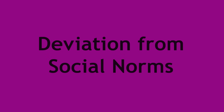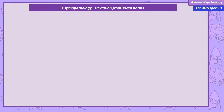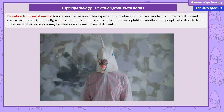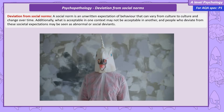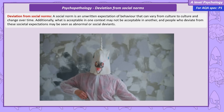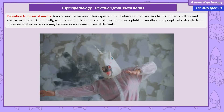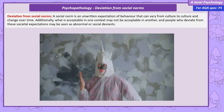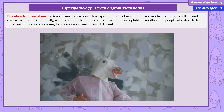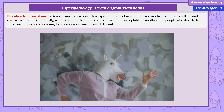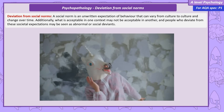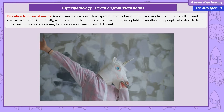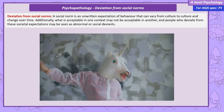A social norm is an unwritten expectation of behaviour that can vary from culture to culture and change over time. Even what is acceptable in one context might not be acceptable in another, and people who deviate from these expectations may be seen as abnormal or social deviants. For example, consider the differences in social norms between a nightclub and a classroom. If someone were to use the social norms of a nightclub in a classroom, they would quickly be seen as abnormal.